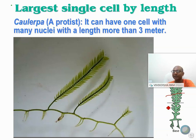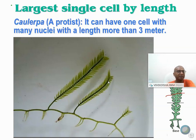This is Caulerpa, a protist. The length may be 3 meters — a single cell, 3 meters long. It looks like a plant body with a leaf-like structure, but it is only one cell because of incomplete cell division. It is siphonous in nature. This is the largest single cell by length among all living organisms.